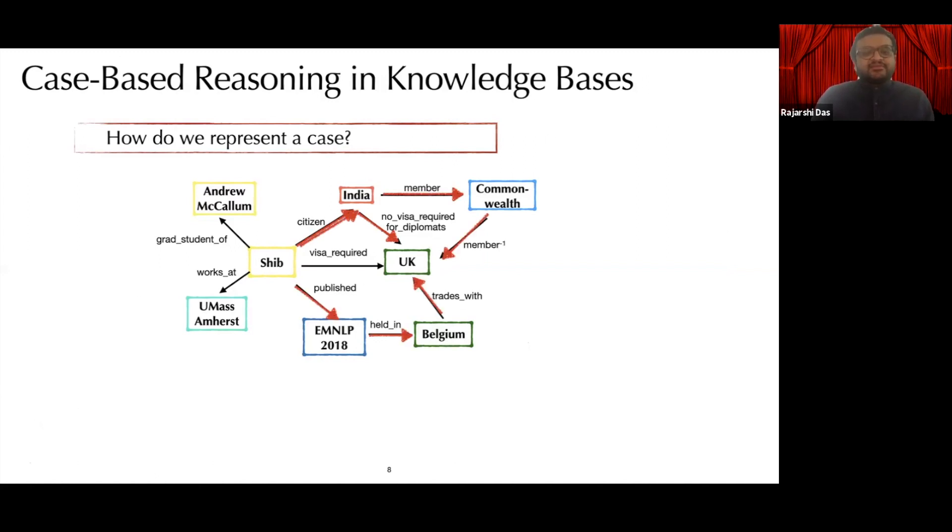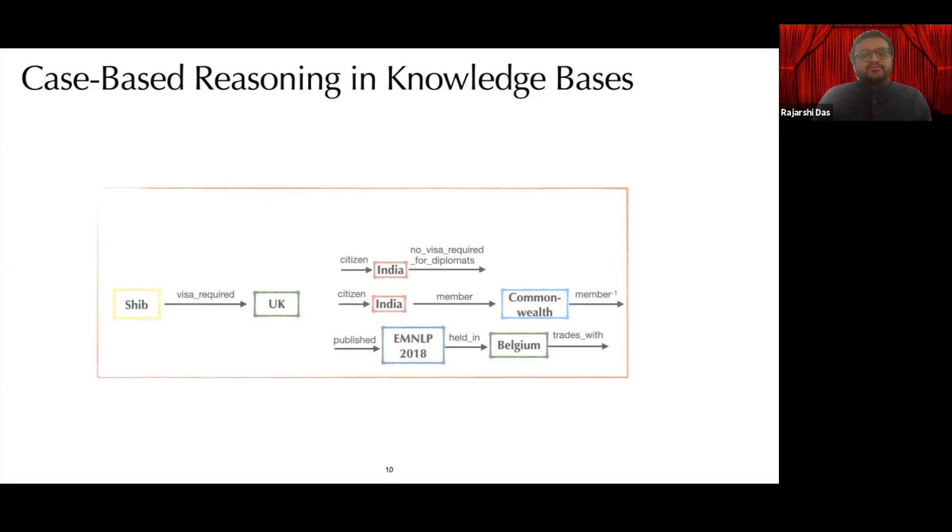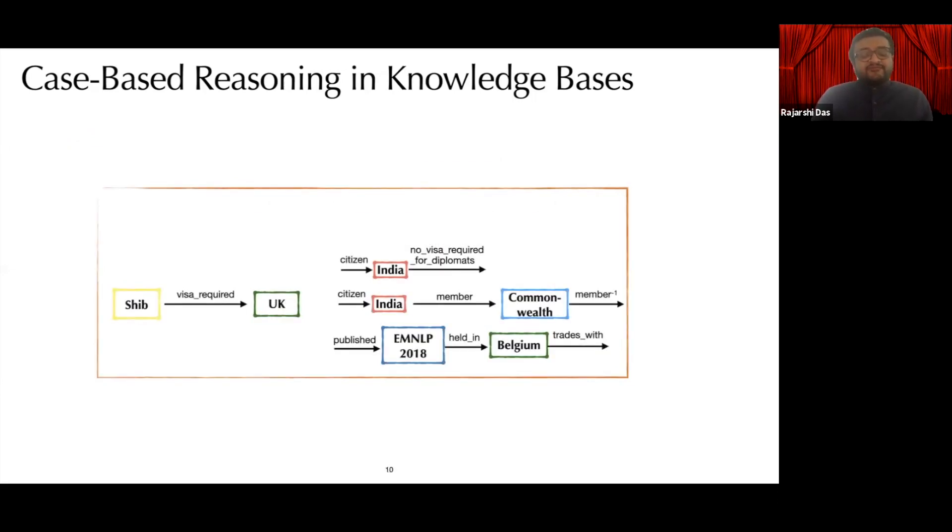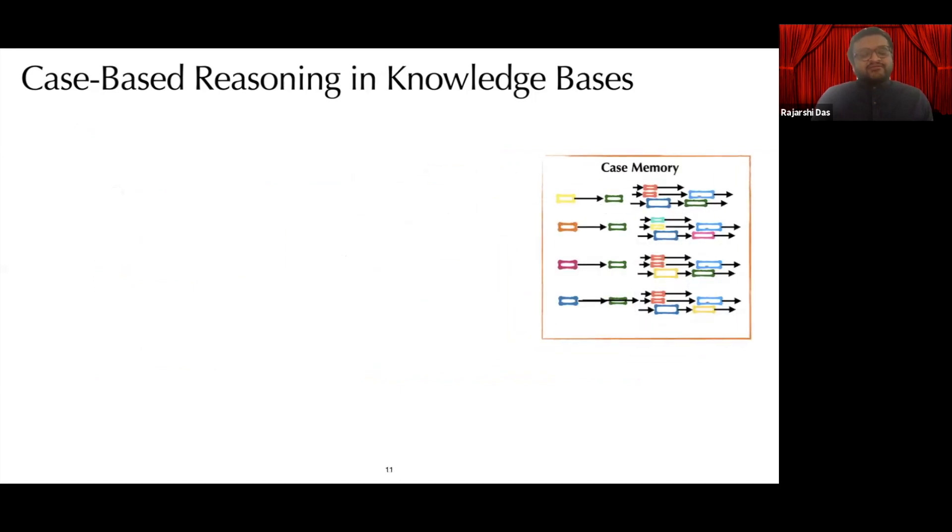A case is represented as a pair of the fact and a set of a random sample of paths up to a certain length connecting the entities in the fact. We repeat this process for every fact in the knowledge graph and thus we have a case memory.